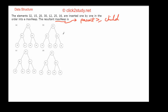Let's start inserting elements one by one. The first element is 32. Then we insert 15 — it goes to the next available position in the complete binary tree, as the left child. Then we insert 20, which goes as the right child. So far everything is fine: parent 32 is greater than both children 15 and 20.